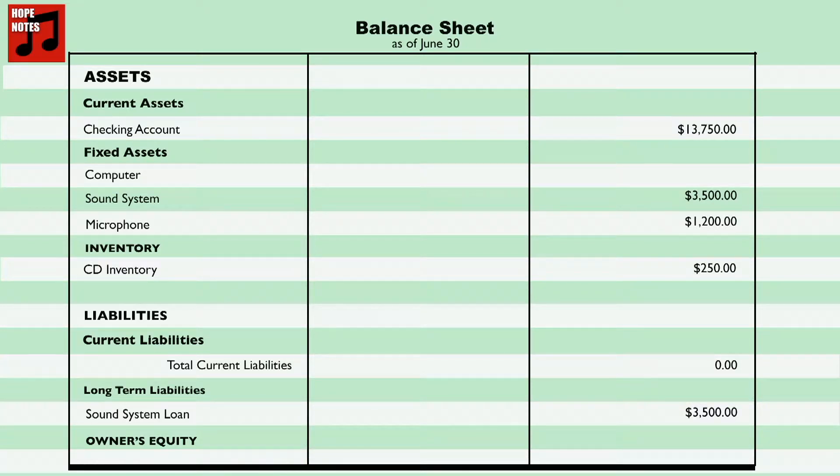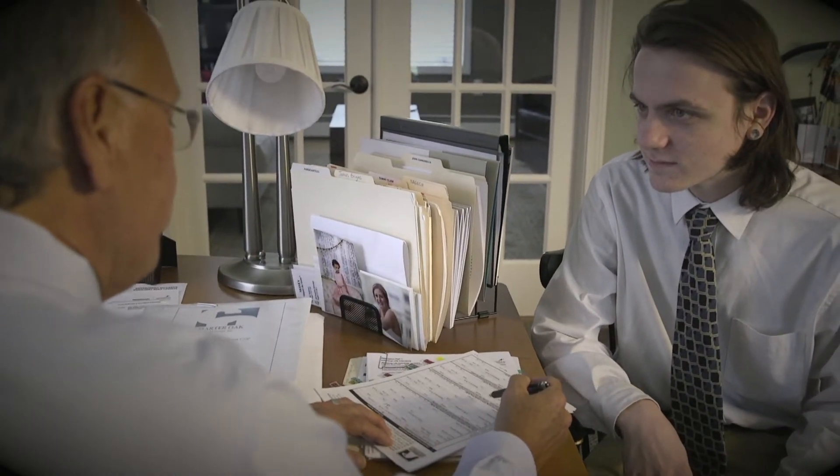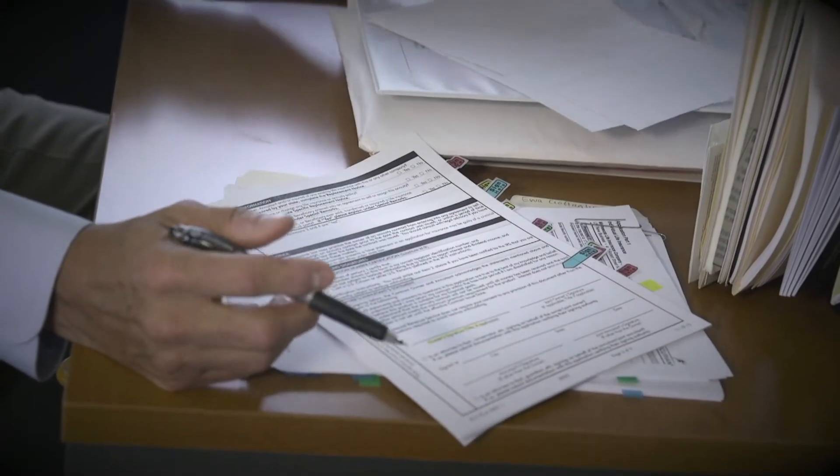When a business applies for a loan, the loan officer also wants to see the business's financial health in terms of how much money is going in and out of the business over time. For this, Anthony will need to provide a cash flow statement. A statement of cash flow details the movement of cash through a company over a specific period of time. Anthony's financial statements provide summaries of his company's operating information. The banker uses that information to determine the financial position of Anthony's company.